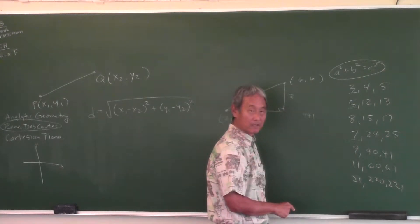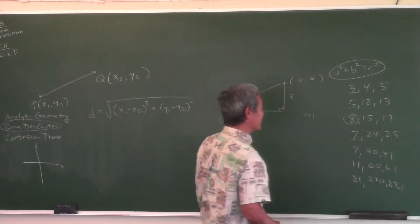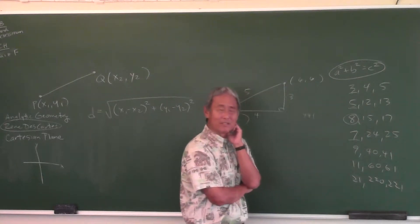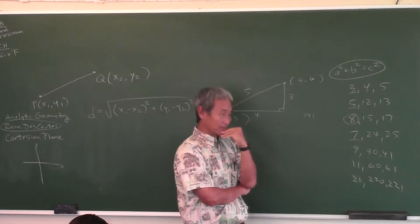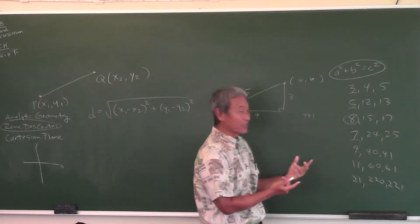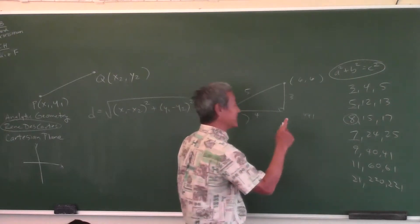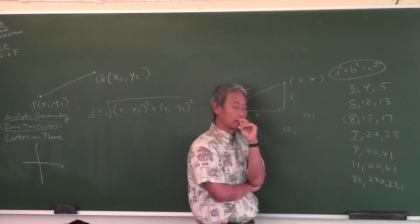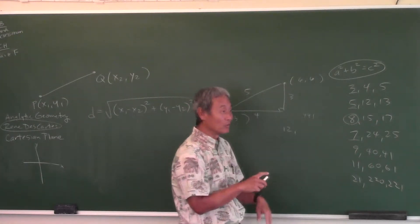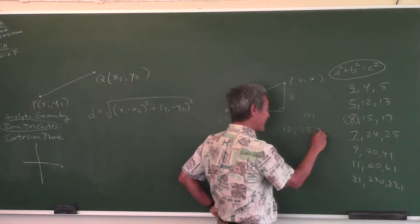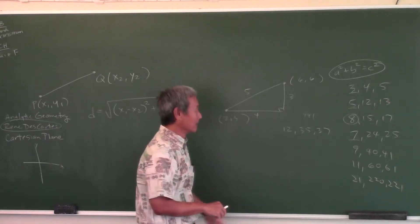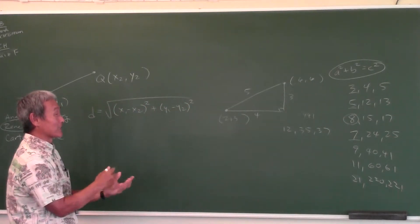What happens if the first number is even? There's a different pattern. What is 8 squared? 64. What do 15 and 17 have to do with 64? They add up to half of it — 15 plus 17 is 32, which is half of 64. So for even first numbers like 12: 12 squared is 144, half is 72, and the consecutive odd numbers that add up to 72 are 35 and 37.